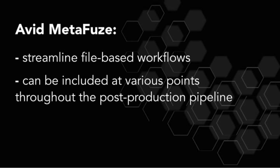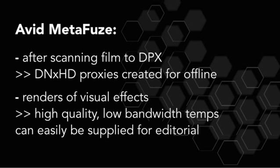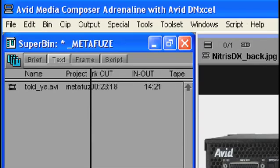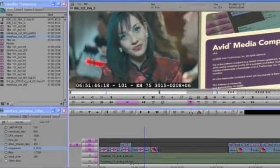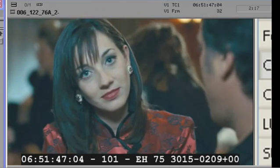Avid Metafuse can streamline file based workflows through inclusion at different stages in the pipeline. For example, after the scanning stage to create Avid DNxHD proxies, or to allow a visual effects facility to quickly send high quality, low bandwidth temps back to editorial with all standard and custom metadata either embedded or on screen or both.